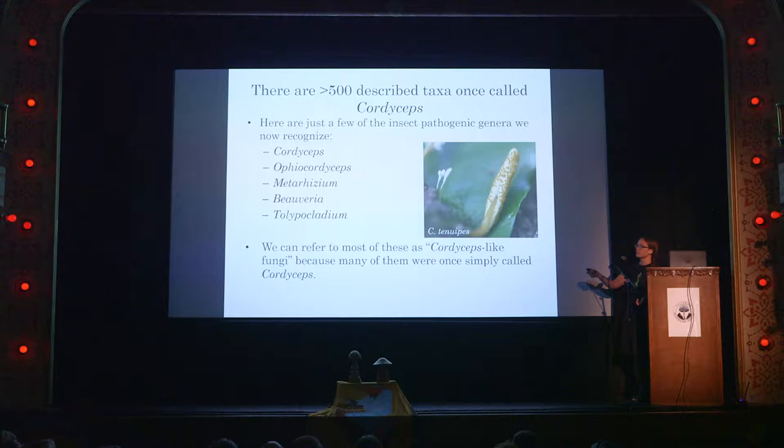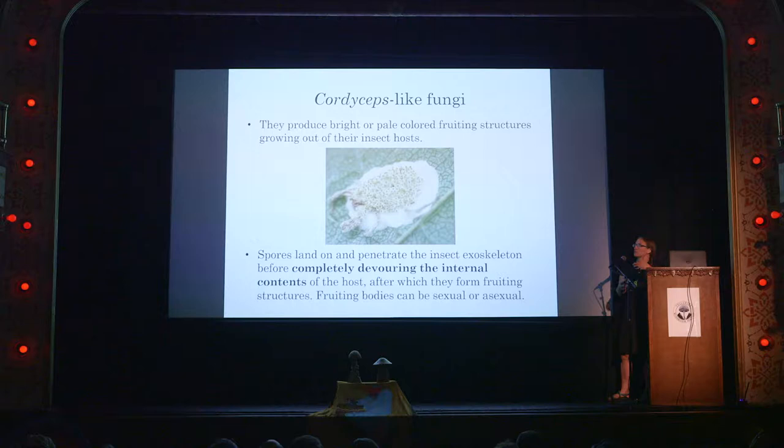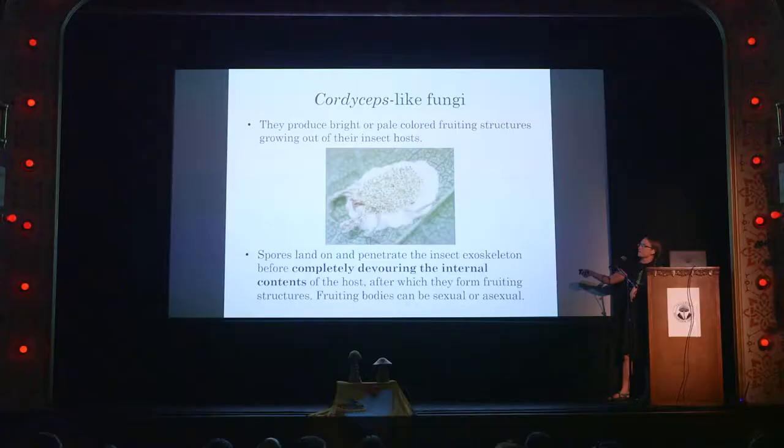They were traditionally classified in the genus Cordyceps, but we now recognize dozens of genera as being part of cordyceps, including still some in Cordyceps, but also Ophiocordyceps, Metarizium, Bovaria, and Talippocladium. We call them cordyceps-like because they were once simply called cordyceps. Most of these were defined by their entomopathogenic or insect-pathogenic life cycle.